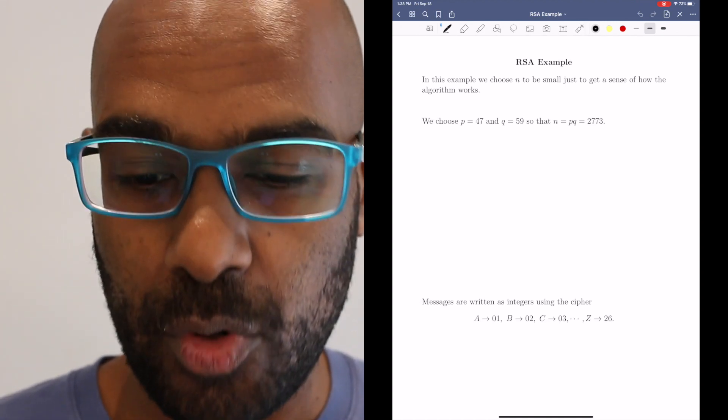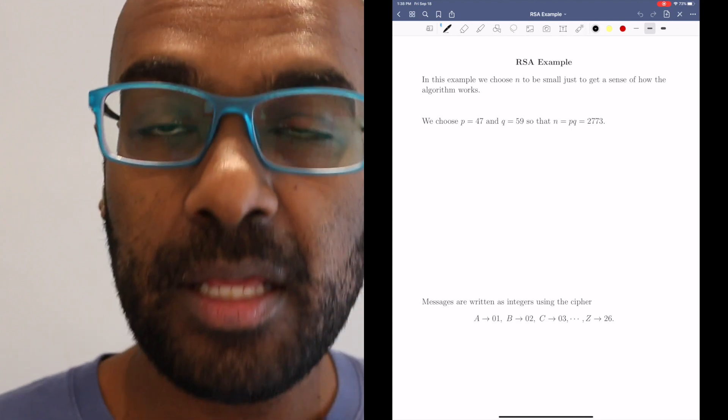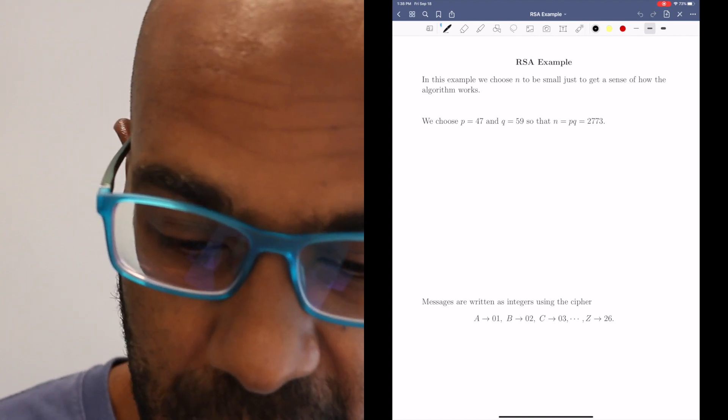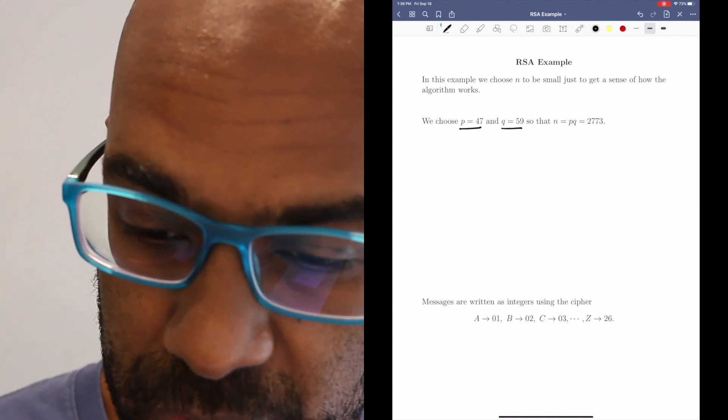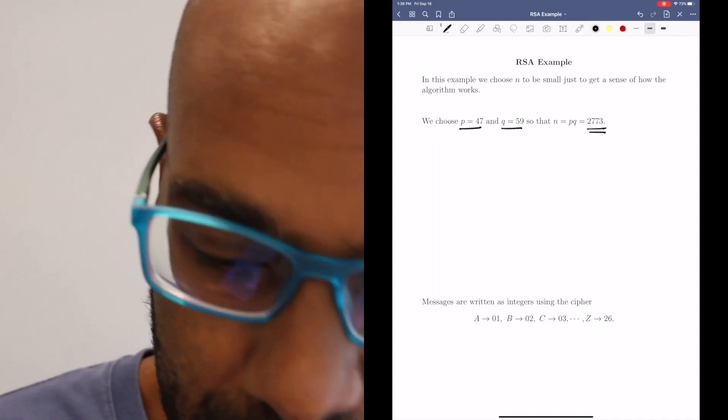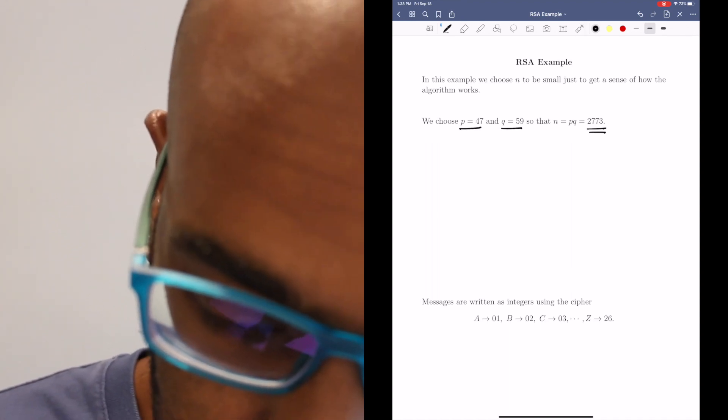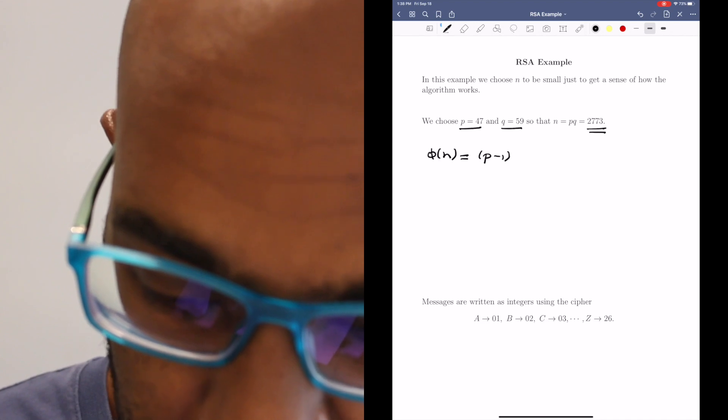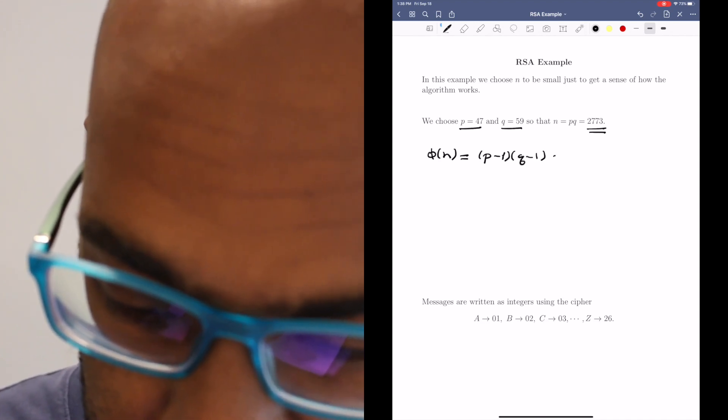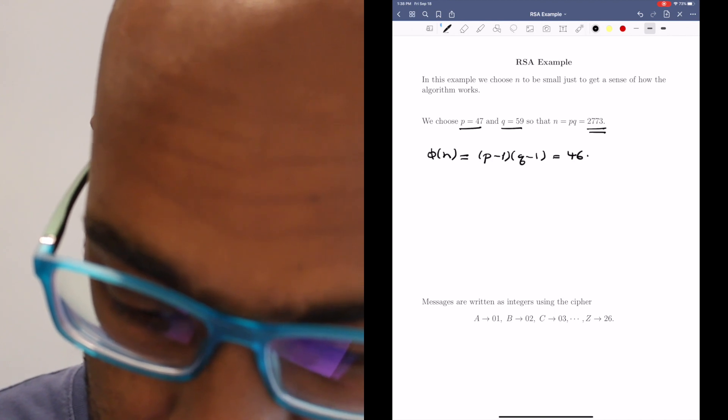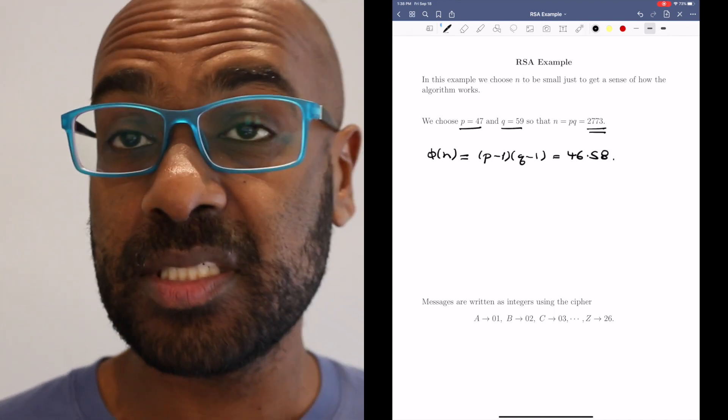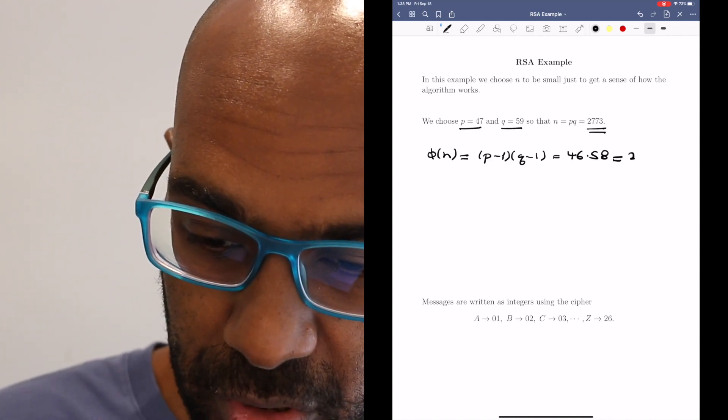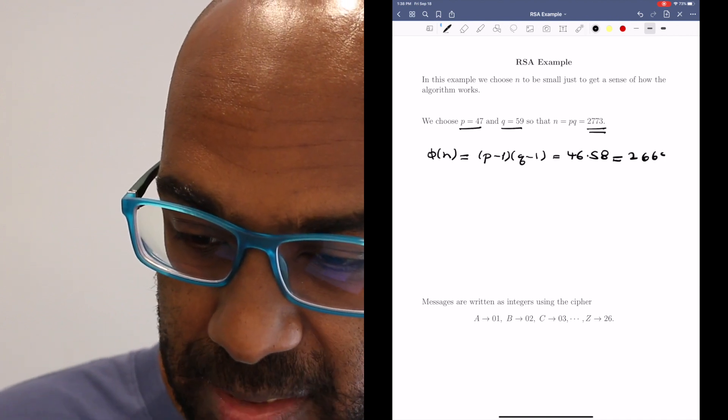One of the things the algorithm required was a number n that's a product of two very large primes. We're going to pick primes that are reasonably sized just for illustration purposes. We're going to pick 47 and 59, so the product is this n right over here. One of the things we're going to need in the algorithm is φ(n), and we talked about in the previous video that φ(n) is p minus 1 times q minus 1, which in this case is 46 times 58. We're going to use this number quite a bit throughout the algorithm for our modular calculations. This number turns out to be 2668.